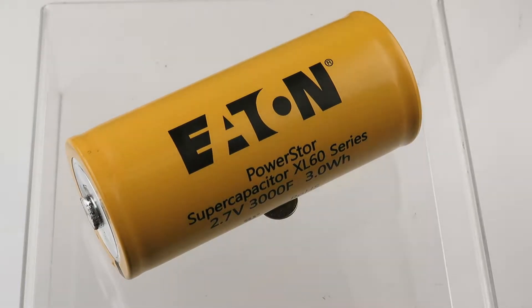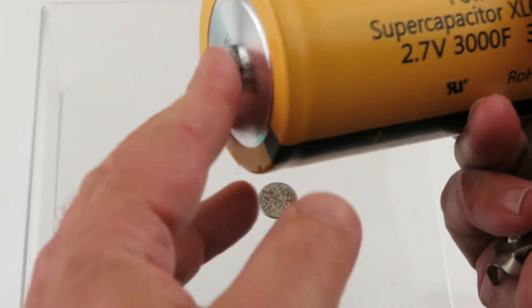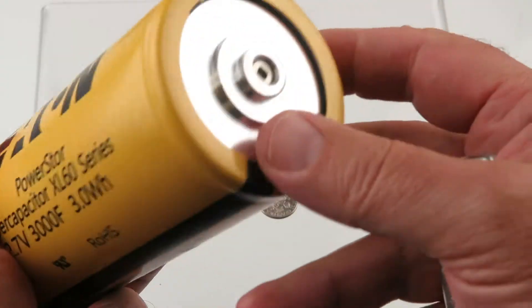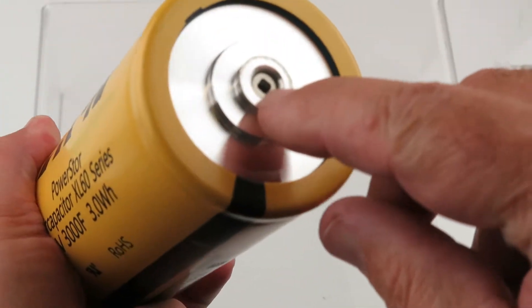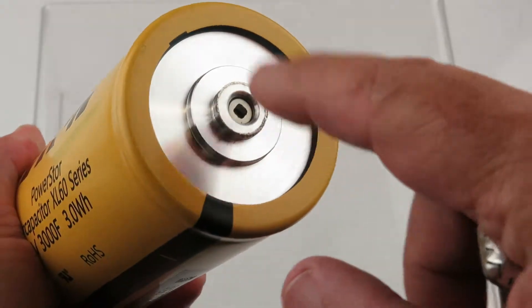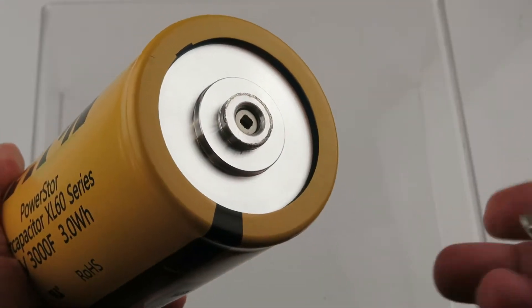Alright, here's our Eaton super caps. These are the same ones but they don't have the attachments on. I'm just going to show you the ends. That right there is a vent, so don't cover that up.